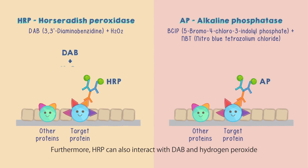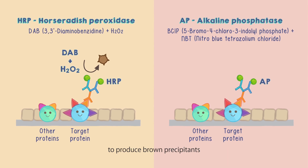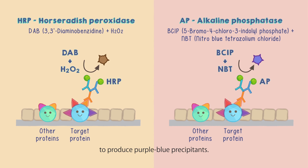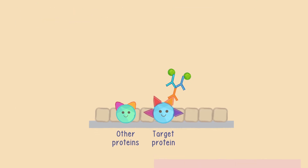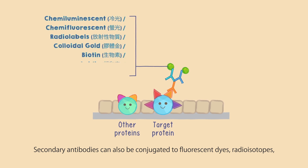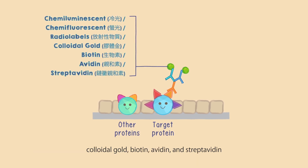Furthermore, HRP can also interact with DAB and hydrogen peroxide to produce brown precipitants, while alkaline phosphatase interacts with BCIP and NBT to produce purple-blue precipitants. Secondary antibodies can also be conjugated to fluorescent dyes, radioisotopes, colloidal gold, biotin, avidin, and streptavidin for different experimental designs and requirements.